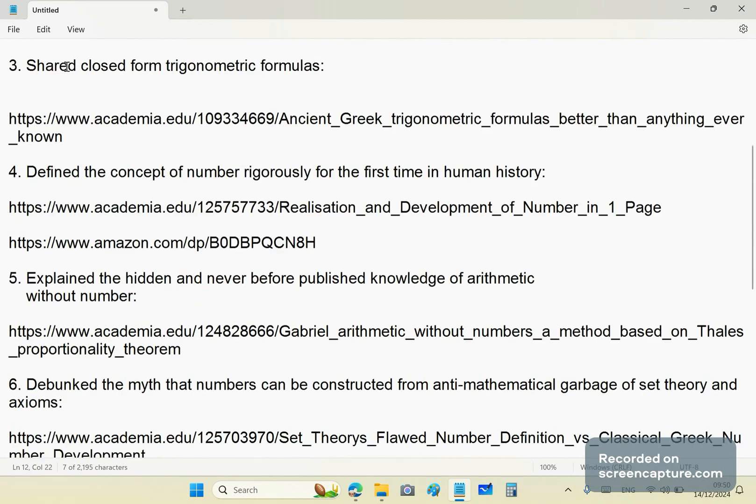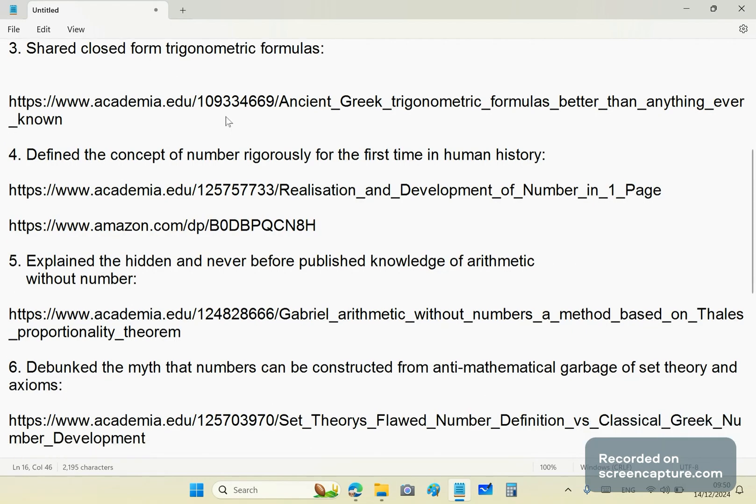The third accomplishment: I shared my knowledge of trigonometric formulas, which I was a little reluctant to share, by the way. Closed form trigonometric formulas. I make Newton look like a retard with this article. I make Newton look like an intellectually challenged individual because what I show you in this article, and it's free by the way, you can actually download it on academia. It's something that none of your low IQ minds would think of even in a thousand years. You're just too stupid for that. So, that's accomplishment number three.